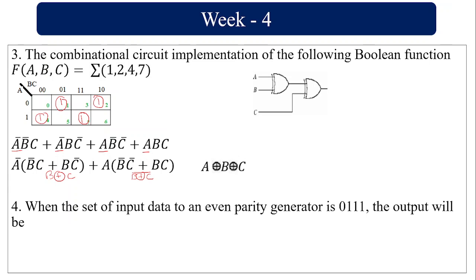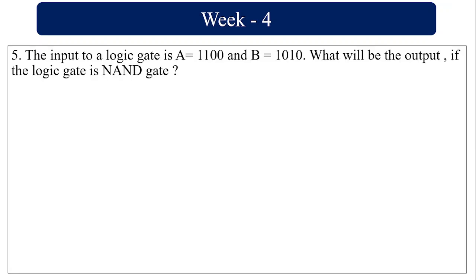When the set of input data to an even parity generator is 0 1 1 1, the output will be 1. For an even parity generator, the output is 0 if the input has an even number of ones, and 1 if the input has an odd number of ones. Here the input 0111 has three ones (odd), so the output is 1.